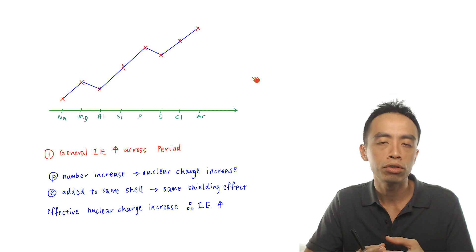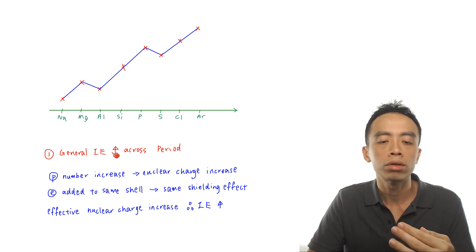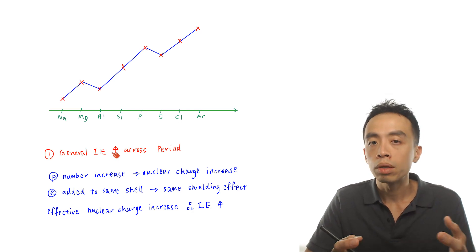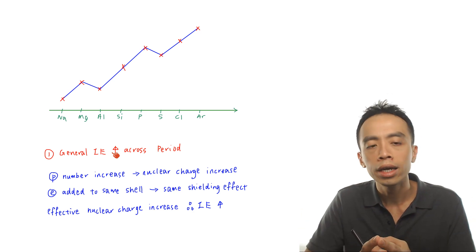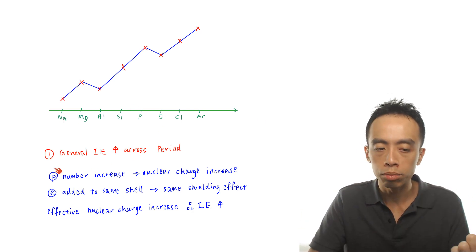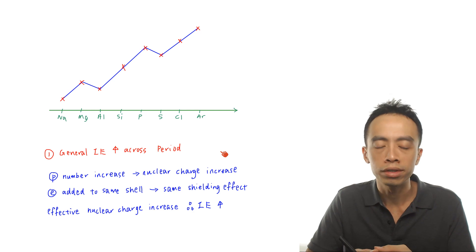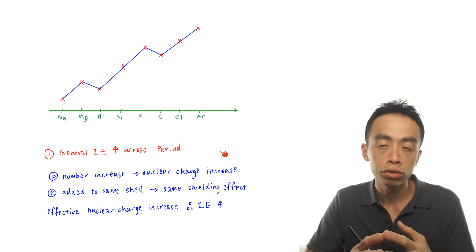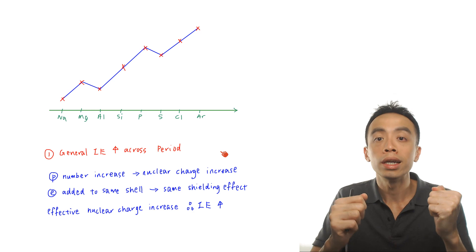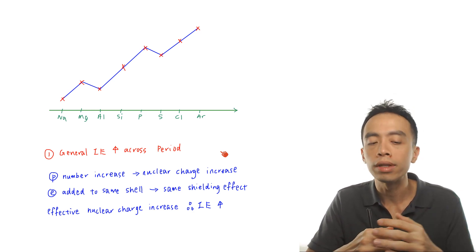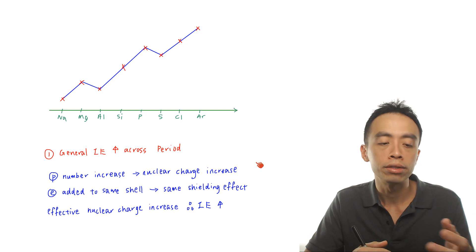Let's explain these three observations part by part. The first observation is that the general ionization energy increases across period 3. The concept we use is effective nuclear charge. Across this period, there's an increase in proton number, so the nuclear charge increases. The more positively charged the nucleus is, the stronger the attraction the nucleus will have on the valence shell electrons, so it hangs on to the electrons more tightly. It requires more energy to remove that particular electron — the higher the proton number, the bigger the nuclear charge, the higher the ionization energy.